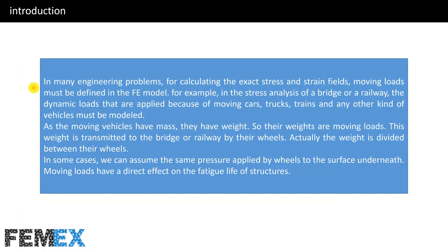In many engineering problems, for calculating the exact stress and strain fields, moving loads must be defined in the FE model. For example, in the stress analysis of a bridge or a railway, the dynamic loads applied because of moving cars, trucks, trains, and other vehicles must be modeled. As the moving vehicles have mass, they have weight, so their weights are moving loads. This weight is transmitted to the bridge or railway by their wheels — the weight is divided between the wheels. In some cases we can assume the same pressure applied by wheels to the surface underneath.